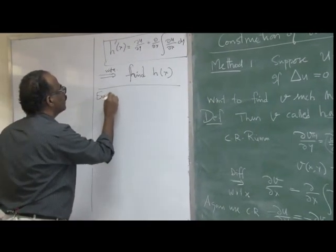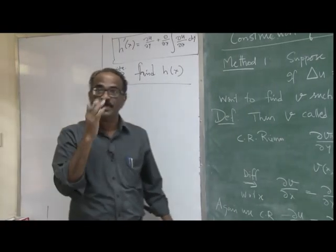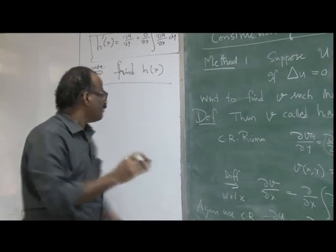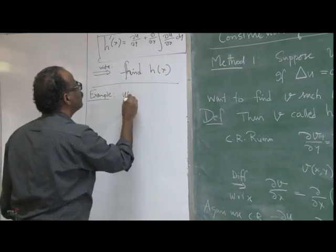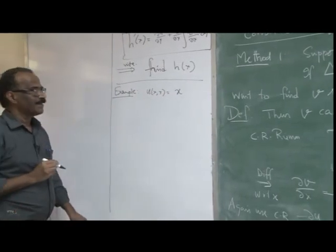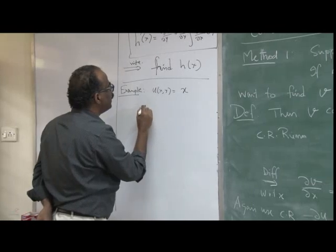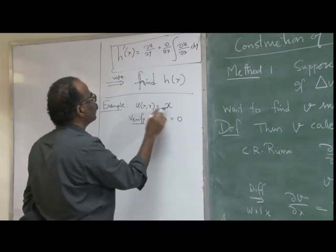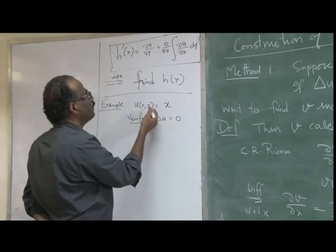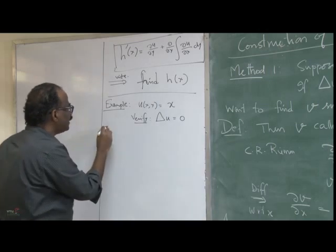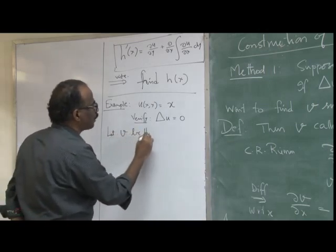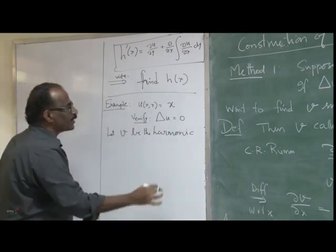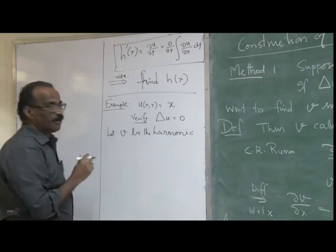Let's do a simple example: u(x,y) = x. Start by writing all the steps — in the examination you must do this systematically. Verify: du/dx = 1, so d²u/dx² = 0; there is no y, so d²u/dy² = 0. Hence the Laplacian of u equals 0. Let v be the harmonic conjugate so that f = u + iv is analytic.